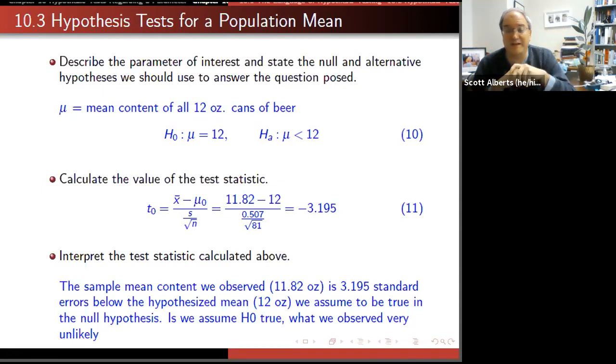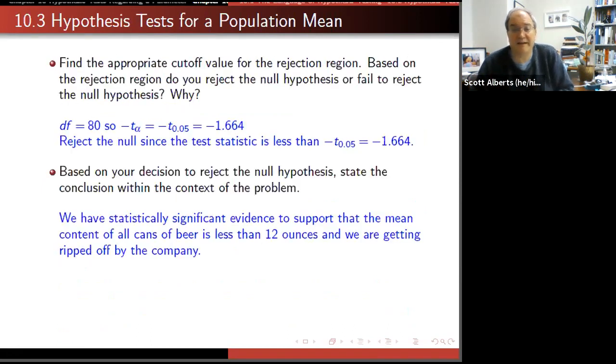We say 11.82 is 0.18 away from the mean. Our sample standard deviation was 0.507 divided by square root of 81 which is 9, and we get minus 3.195. Remember 2 is our general threshold - if it's bigger than 2 it's going to be big enough. This is minus 3, so that's going to make us think it's significant. We calculate the p-value and say that it is in fact very tiny. For data like this, 1.664 was going to be the value that we're going to use for a 95% one-sided hypothesis test.